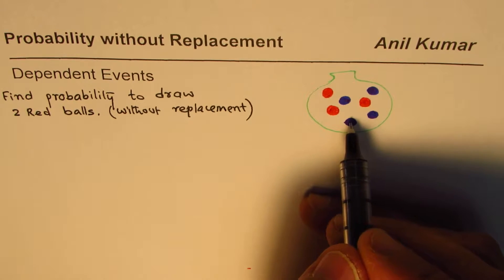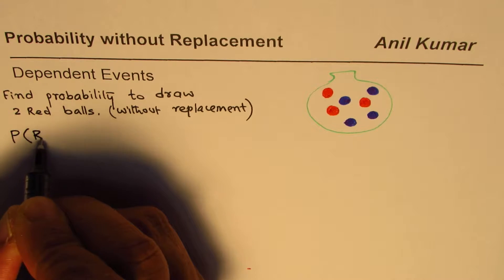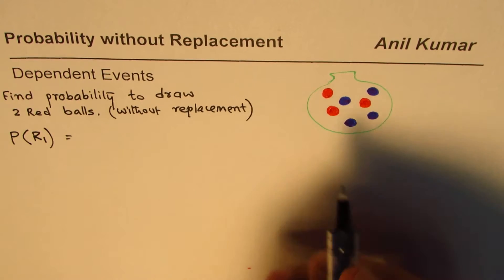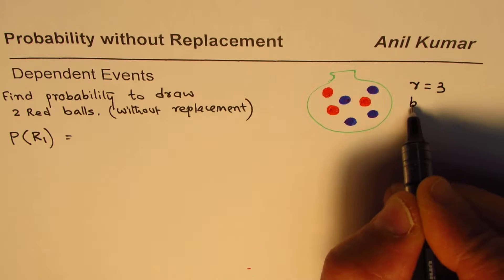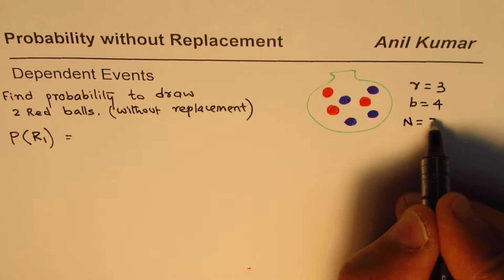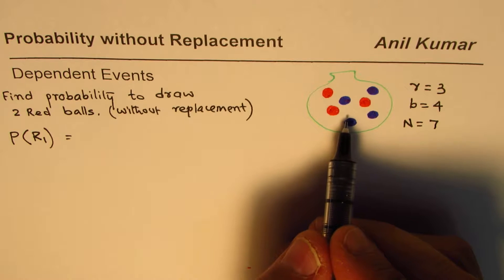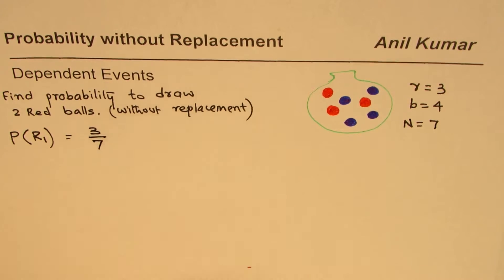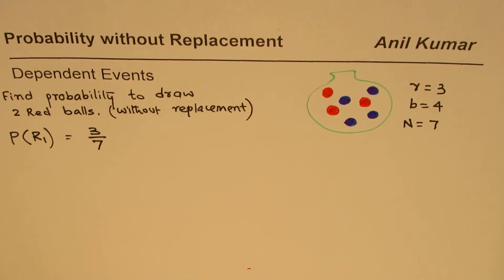What is the probability of getting the first red ball? Let me write this as P(R1) — the probability of getting the first red ball. We have three red balls and four blue balls, so the total number of balls n = 3 + 4 = 7. The probability of picking a red ball is 3 out of 7.